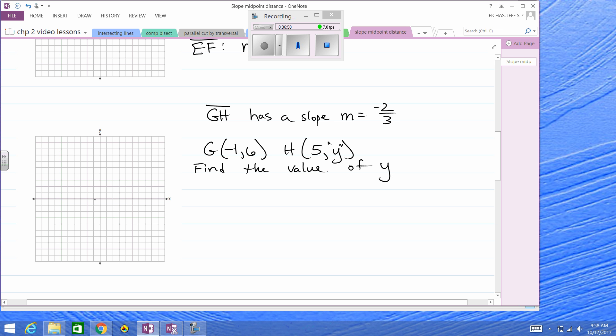All right, you could use algebra, or if it fits on the graph, we could try it graphically. So negative 1, 1, 2, 3, 4, 5, 6, and that's G. And H is somewhere over here. I don't know exactly where. Somewhere where x is 5. Let's use the slope of negative 2 thirds. That means down 2, right 3. Let's see if that will help us. And if I go down 2, right 3. Down 2, right 3. Oh, perfect. It lands right there. That's going to be H.